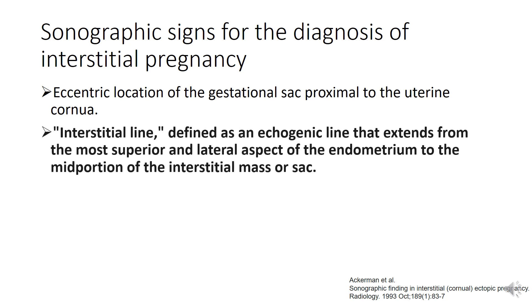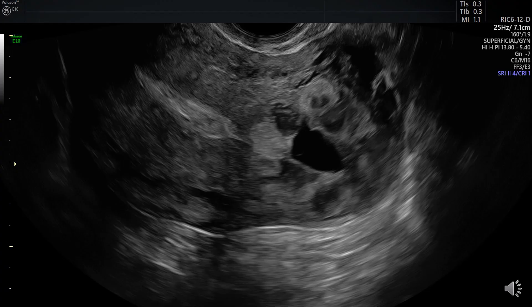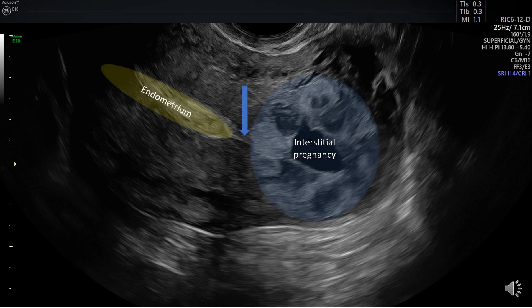Interstitial line. This is defined as an echogenic line that extends from the most superior and lateral aspect of the endometrium to the mid-portion of the interstitial mass or sac. In this picture, we have a visualization of the echogenic line that runs from the endometrial cavity to the corneal region, abutting the interstitial mass or gestational sac.